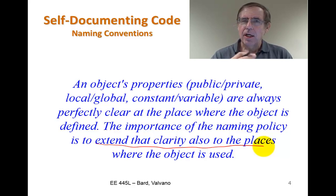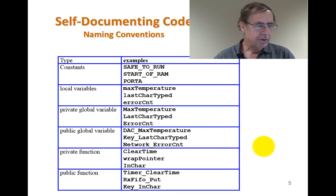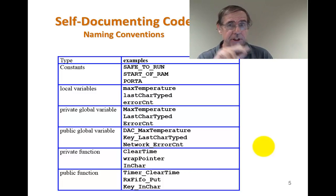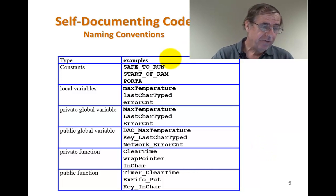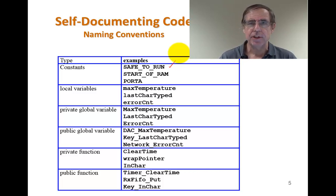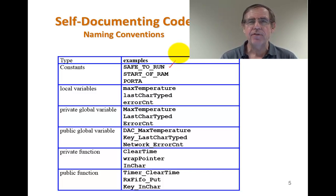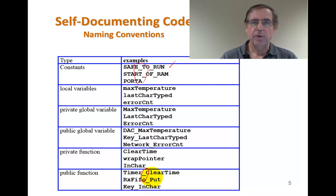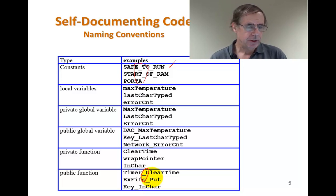So let's look at some examples. According to the rules of Valvano — which again, you don't have to follow, but you have to have one — if you use all capital letters, that's a constant, not a variable. A port address is a constant, so it gets all capitals. To concatenate capital words, I'll use the underline. That underline is different from the underline used for public variables and public functions. The first letter of my variables tells me whether it's private or public in scope.